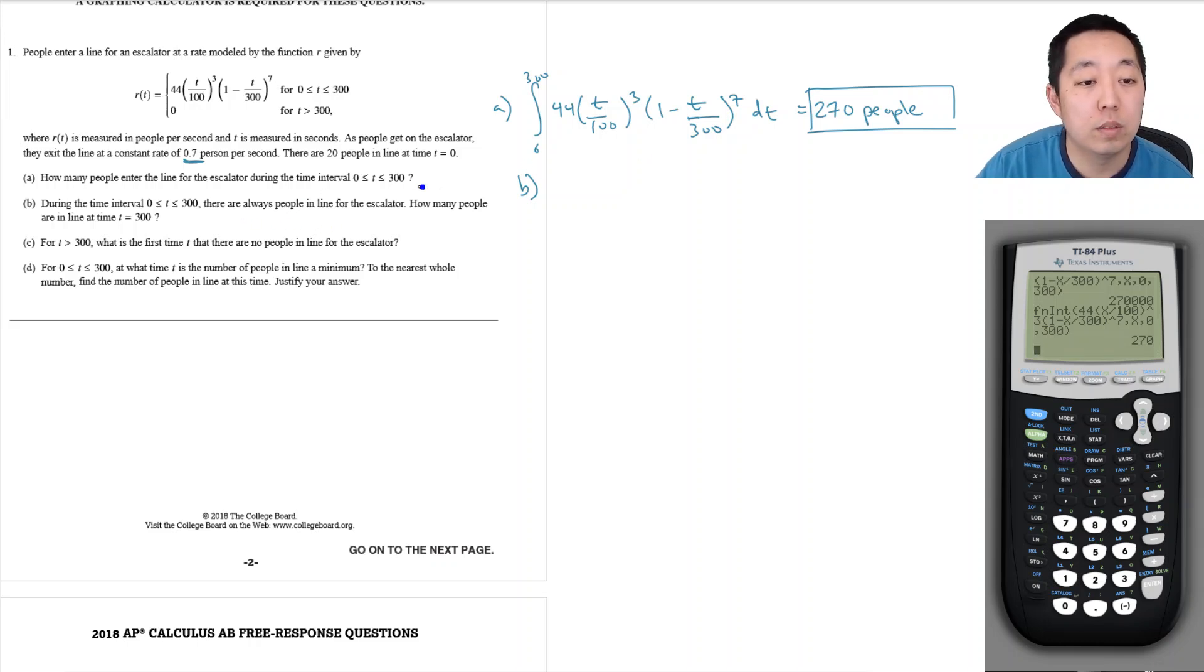We started with 20 people, we added 270 people by the end, but how many people were leaving the line at 0.7 per second for 300 seconds? So 20 plus 270 minus 0.7 times 300 equals 80 people.